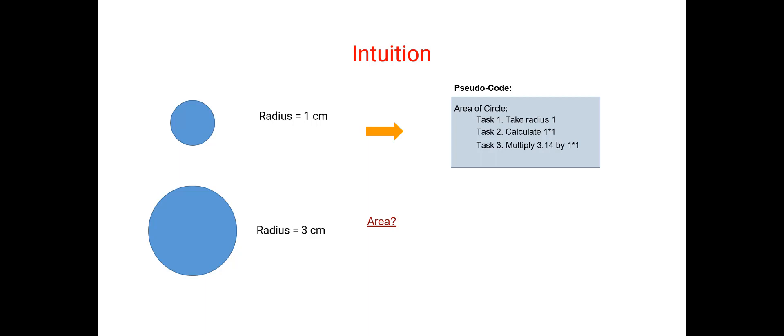Suppose you want to calculate the area of a circle whose radius is 1 cm. This is a very straightforward pseudocode that you can use to find the area. You take the radius 1, square it, and multiply the square by 3.14. Now suppose you have written this code and your friend comes to you and asks you to give the area of a circle whose radius is actually 3 cm.